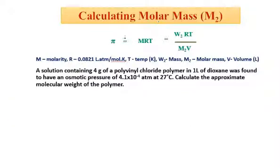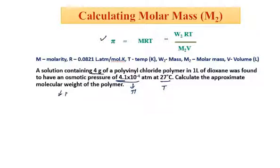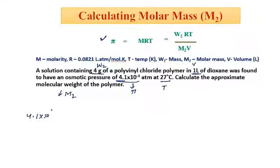In the next problem, I will discuss how to calculate molar mass using the osmotic pressure formula. The problem says a solution containing 4 grams of polyvinyl chloride polymer in 1 liter of dioxane was found to have an osmotic pressure of 4.1 × 10⁻⁴ atm at 27°C. We need to calculate the approximate molecular weight (M₂) of the polymer. We apply the formula π = W₂RT / (M₂V).